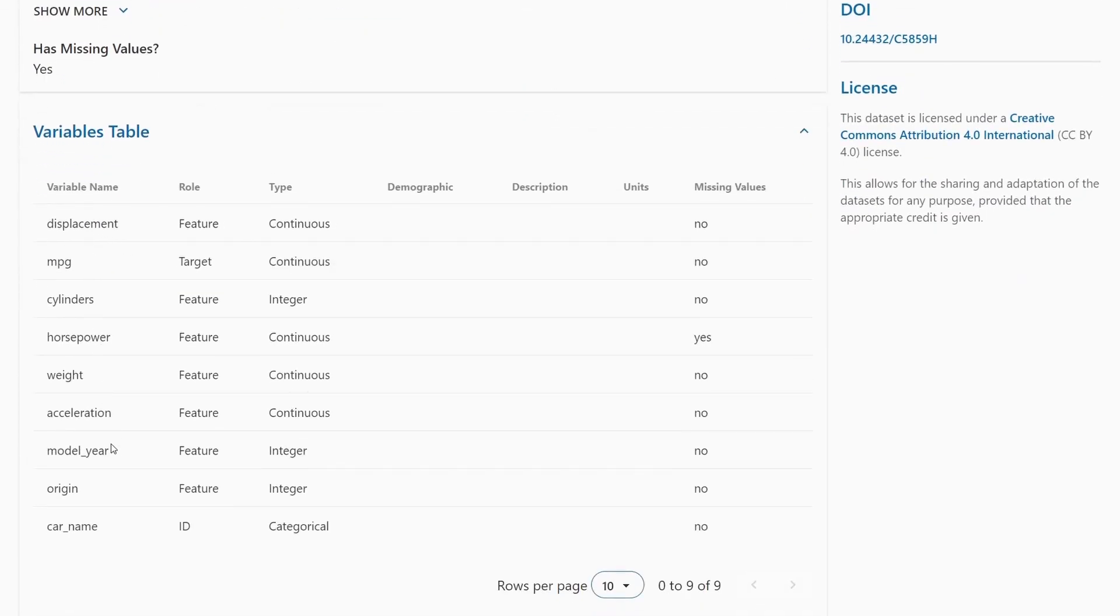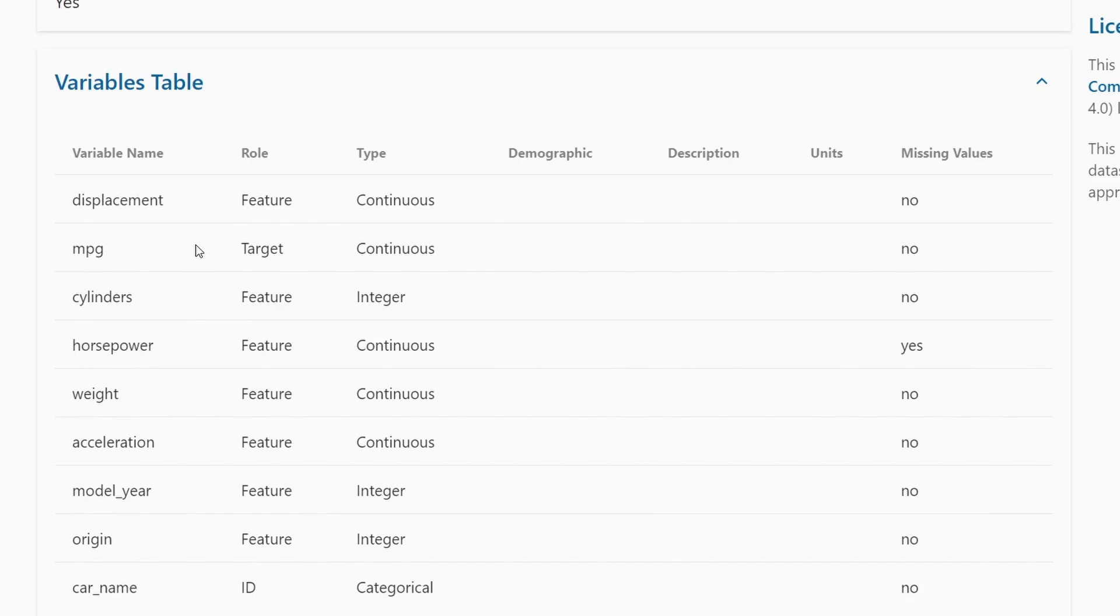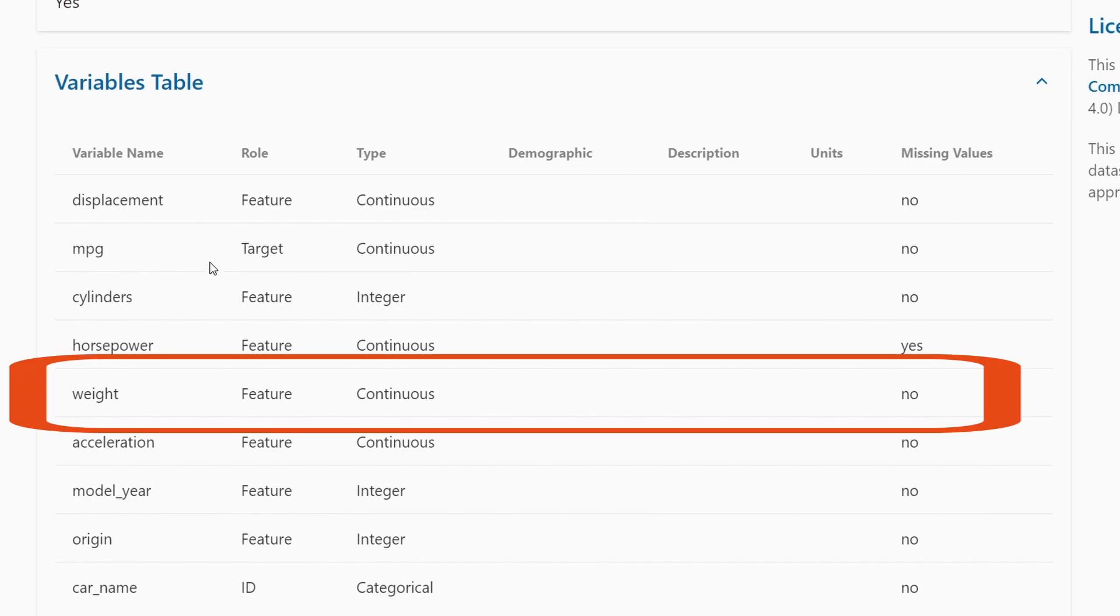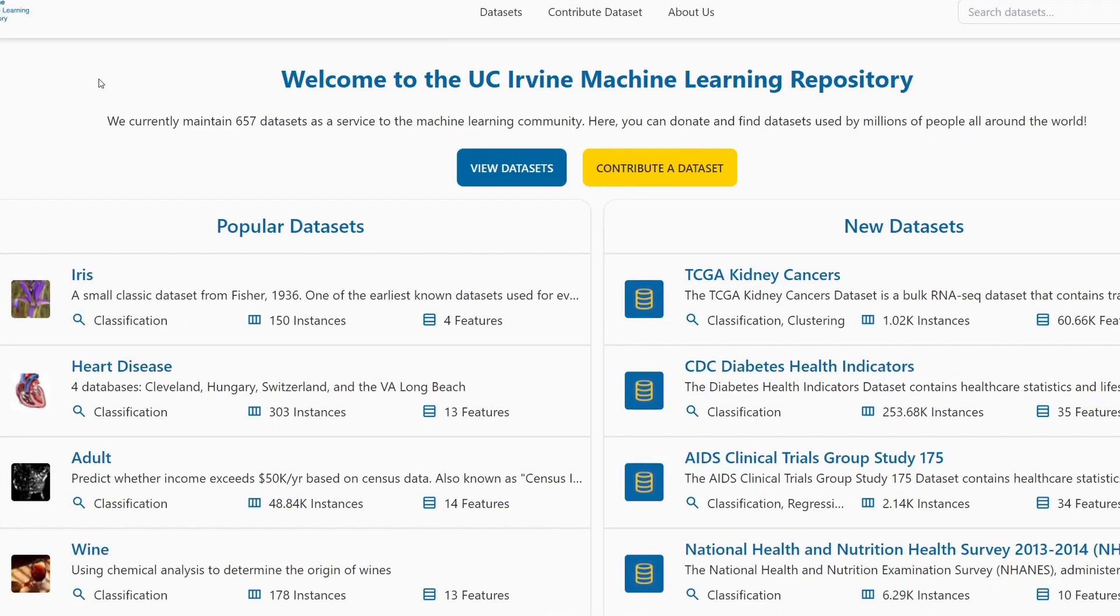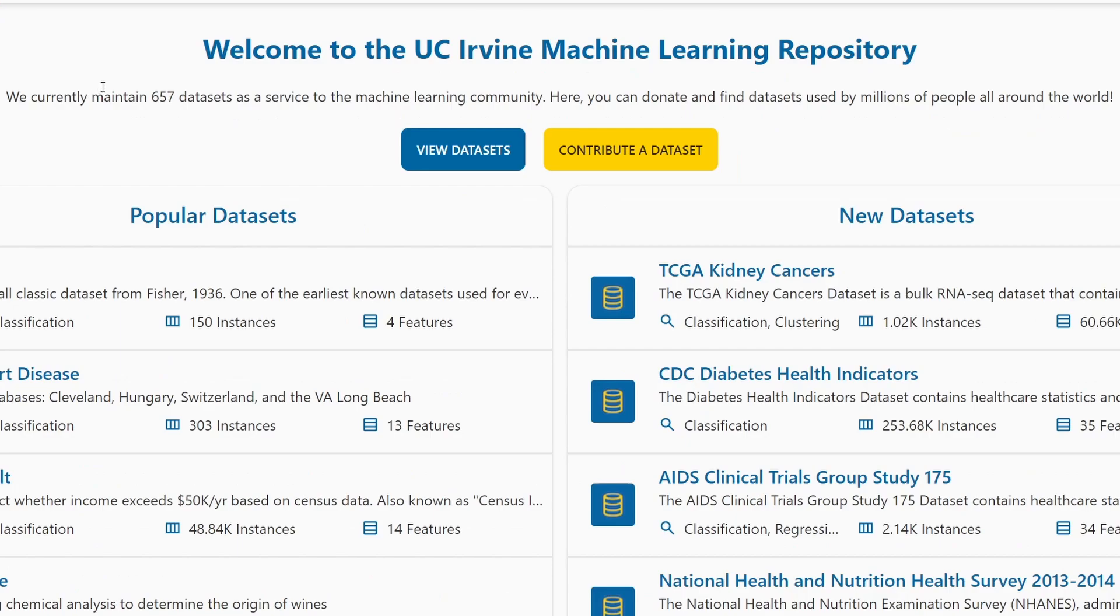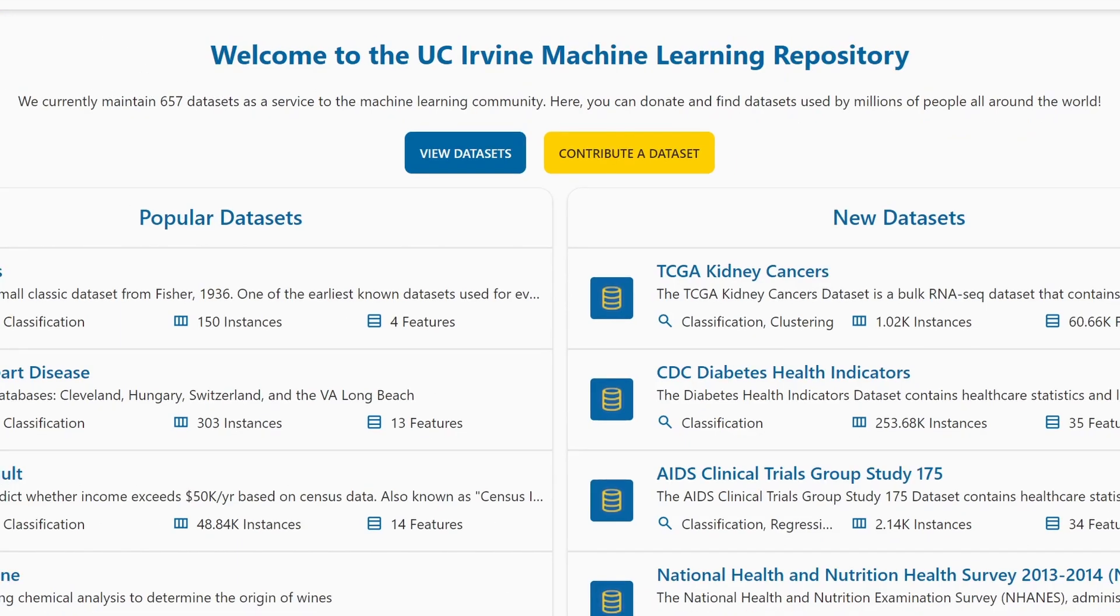For example these are features here. And one of these features is this one, the weight feature of the vehicle. And the UCI machine learning repository is actually very useful since you have a lot of data sets in here. Check it out. It's definitely worth to have a look there.